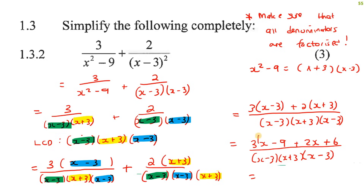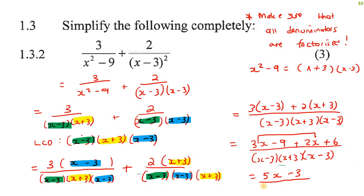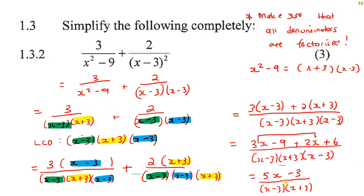Now we put the x's together to get 5x. Don't say 5x squared — we're adding, not multiplying. Then minus 9 plus 6 is minus 3. At the bottom, just write it out. Your teacher might take the two repeated brackets and write it as one bracket squared. You can leave it as two individual brackets or write it as one bracket squared — either way is fine. And that's it, you can't go any further.